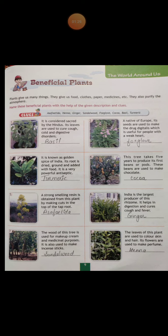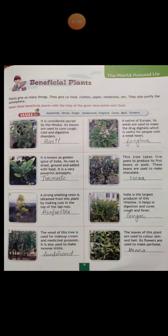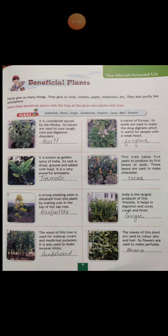The third one: it is known as the golden spice of India. Its root is dried, ground, and added to food. It is a very powerful antiseptic — everybody uses this at home. It is known as turmeric.